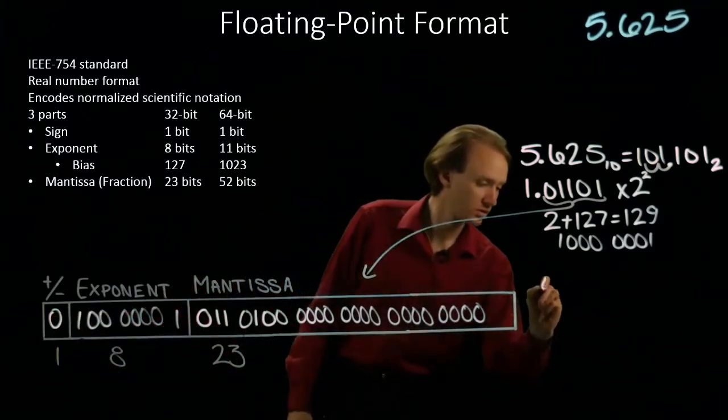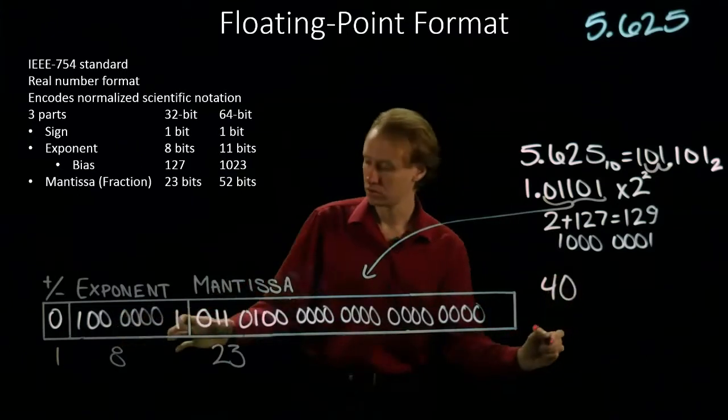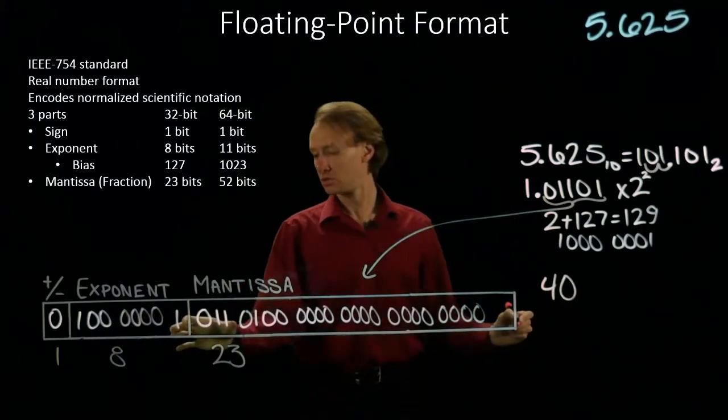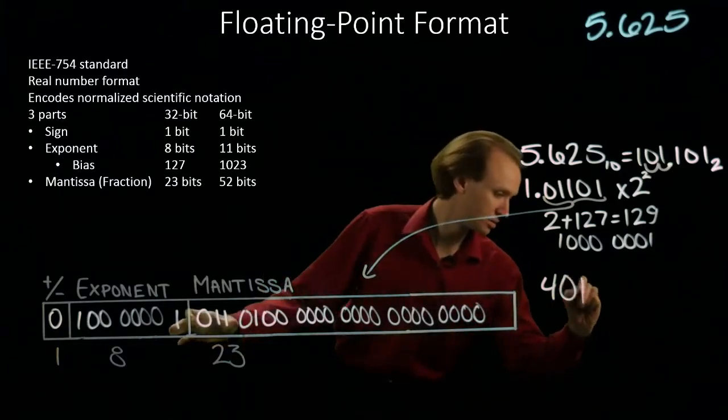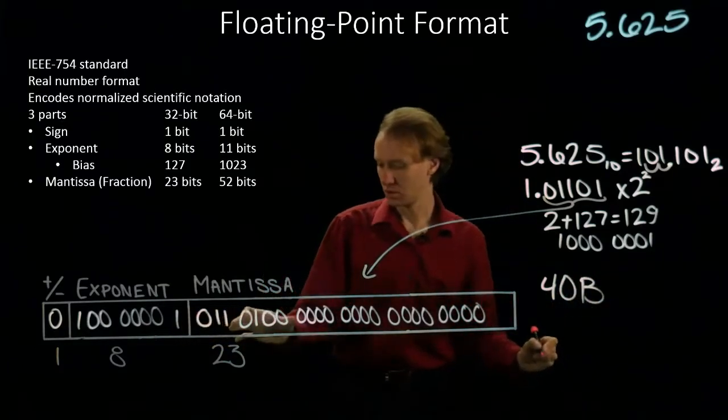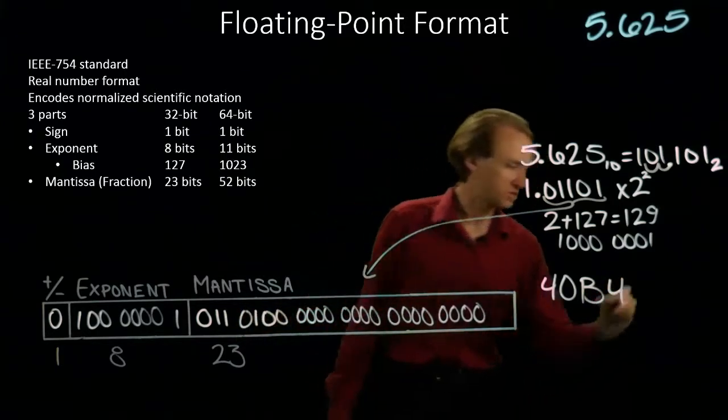So here I have 4, 0, 8 plus 3 is 11 which is B, and then 4, and then 4 blocks of zeros.